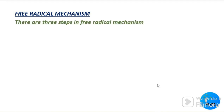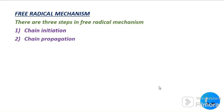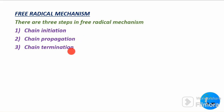In free radical mechanism, it consists of three steps: chain initiation, chain propagation, and chain termination. Now we are going to see one by one how chain initiation takes place, what products are formed, what happens in chain propagation, and what happens in chain termination.